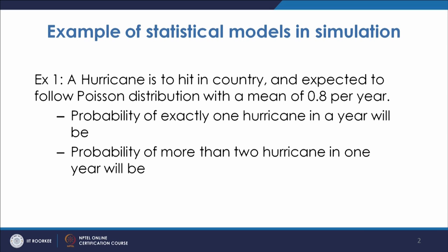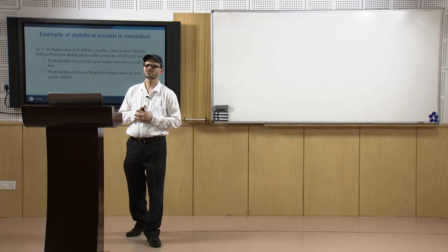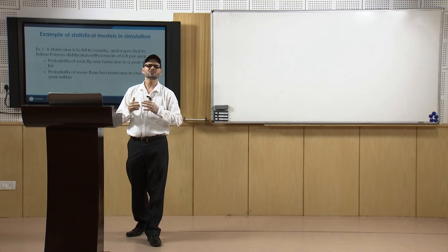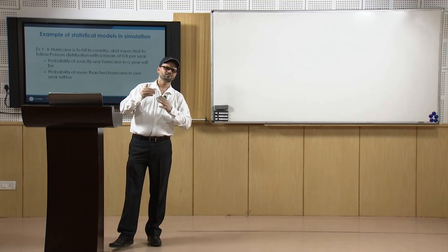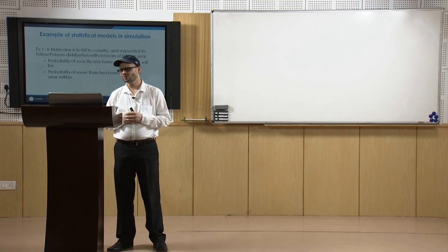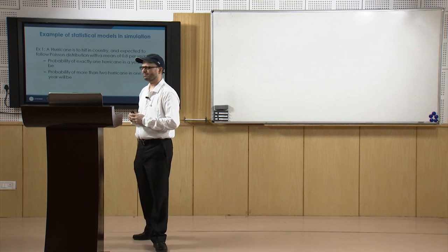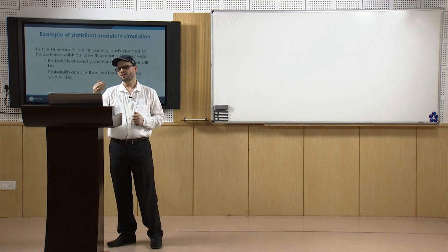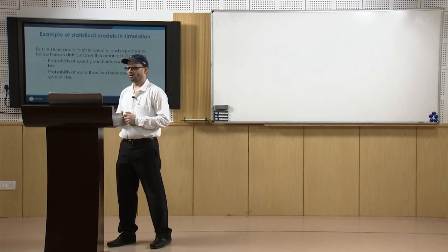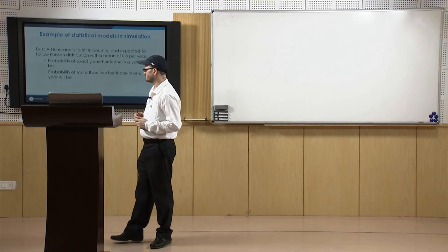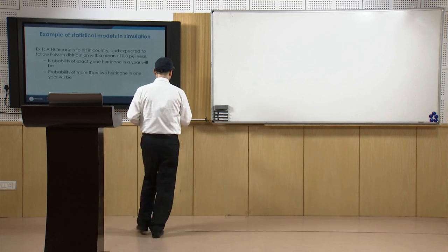In the first case you have to simply find f(x), and in the second case you may use the cumulative distribution function value and then find the probability of having more than two hurricanes in the year.